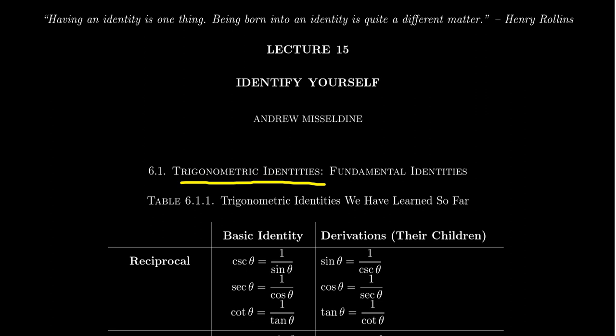Trigonometric identities — really what an identity is — is just an equation for which any evaluation of the variable will always make the statement true. It's saying something like: if you take (a + b)², this equals a² + 2ab + b². It doesn't matter what you choose for the real numbers a or b. The left-hand side and the right-hand side will always equal each other. That's what we mean by an identity.